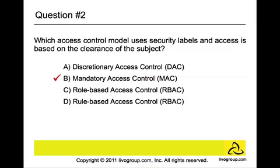In order to access a given object, the subject must have a sensitivity level equal to or higher than the requested object. For example, if you wanted to access a secret file, you have to have a secret clearance or a higher clearance — which is top secret — in order to access the requested file.